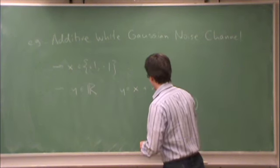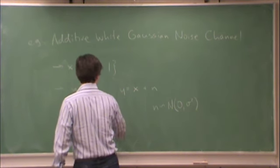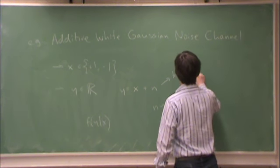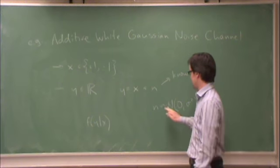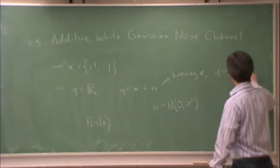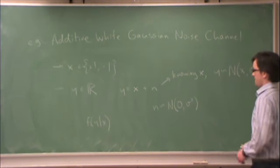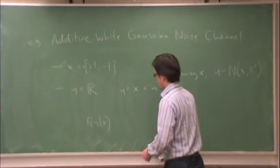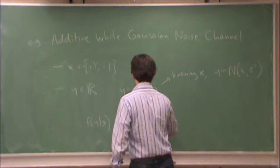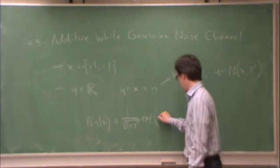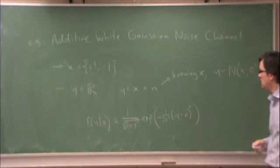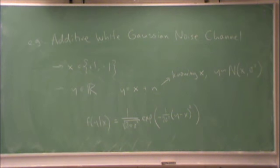Anyway, the Gaussian PDF, f of y given x. So if I know what x is, then knowing x, then x is deterministic. x has no additional variance, but it will offset the noise by either plus one or minus one. Then y is distributed Gaussian with mean x, variance sigma squared. Which means f of y given x is given by this: 1 over root 2 pi sigma squared, e to the power of minus 1 over 2 sigma squared, y minus x squared.